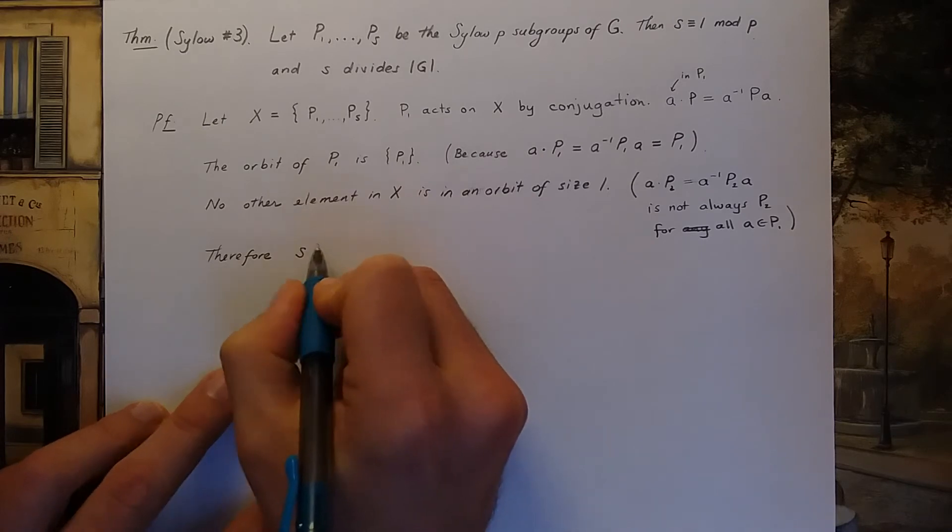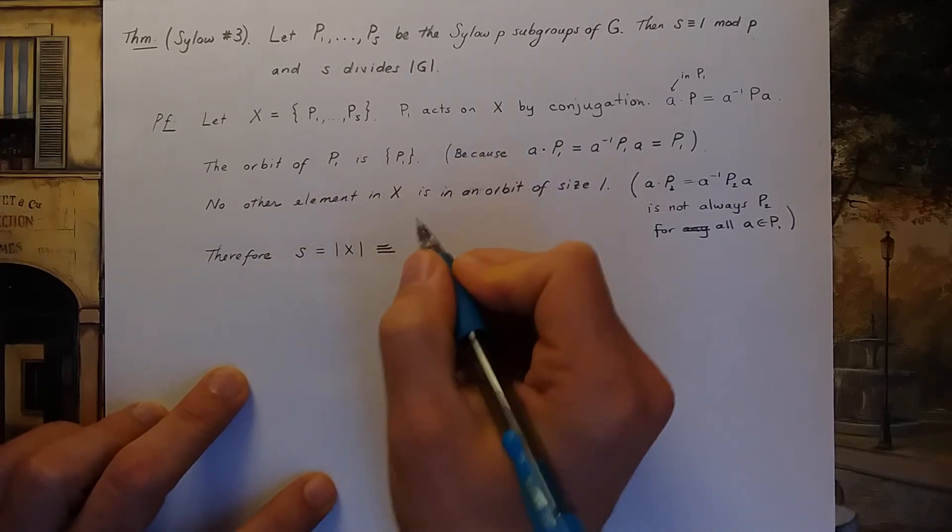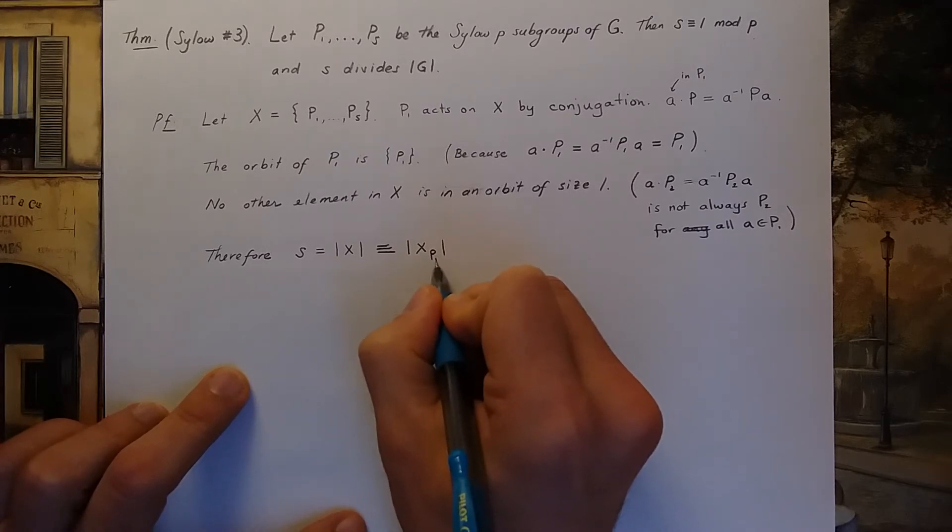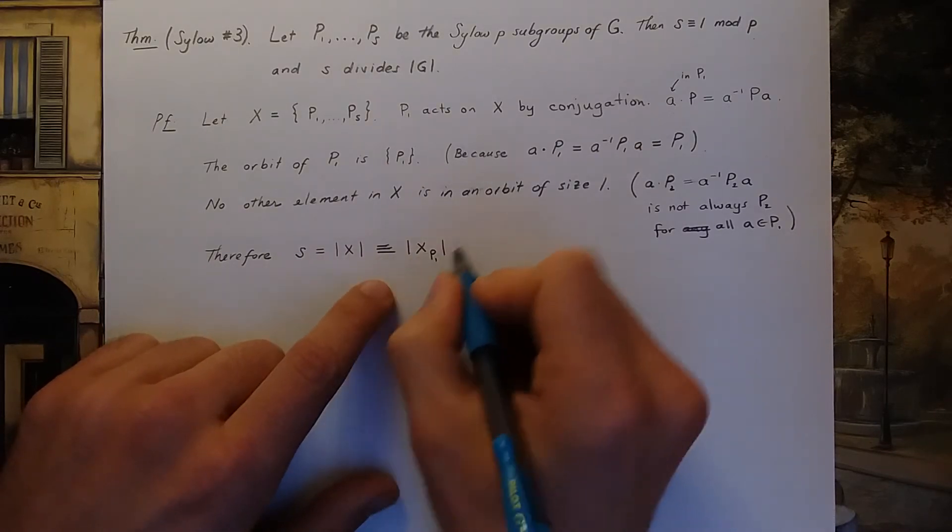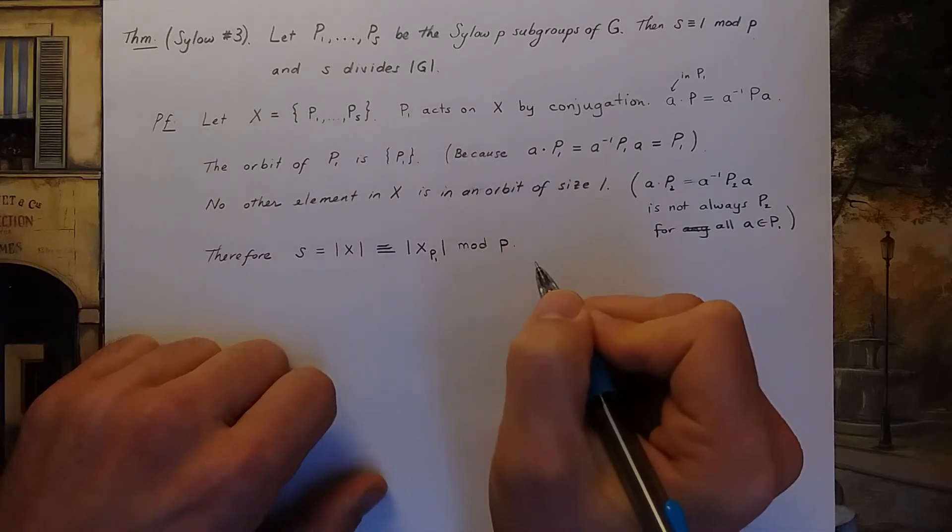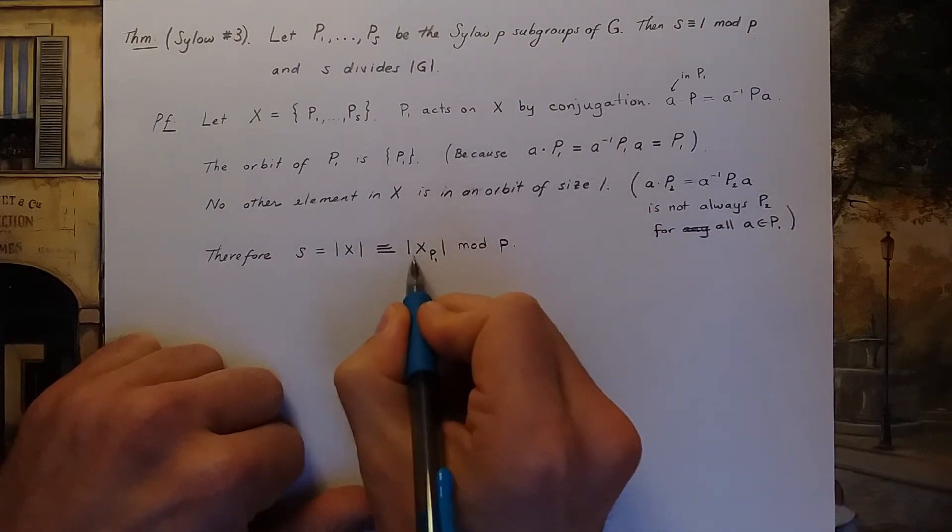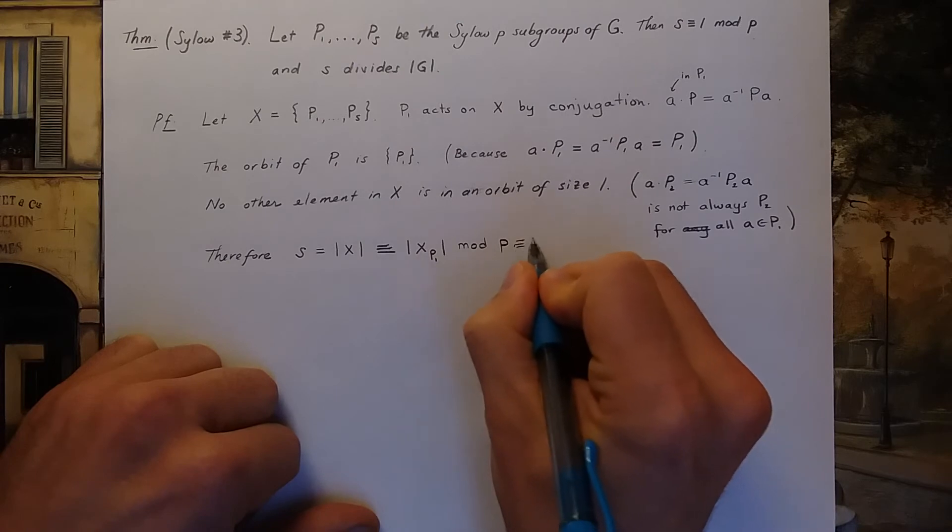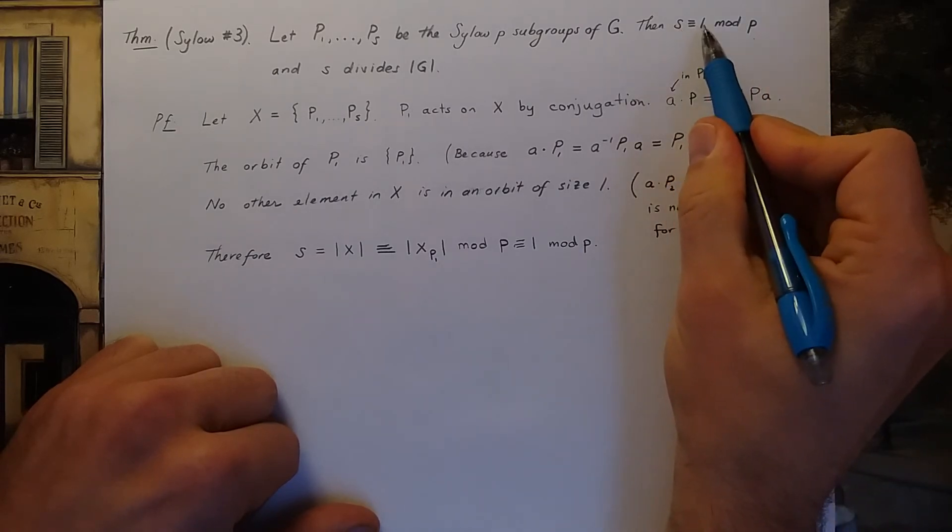Therefore, S, that's the size of the set X, is congruent to the size of those elements in X that are fixed by everything in P₁. This was our lemma from a few videos ago. This is working mod p. But the argument here says that the only orbit of size 1 is the orbit that contains P₁. So this is equal to 1 mod p. That's the first statement here: S is congruent to 1 mod p.